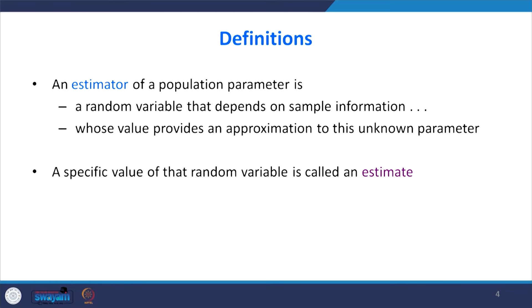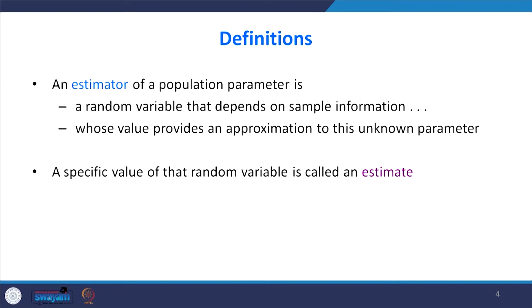Before getting into the content, let's define estimator and estimate. An estimator of a population parameter is a random variable that depends on sample information — it provides an approximation to the unknown parameter. A specific value of that random variable is called an estimate. For example, X-bar is an estimator for population mean, S-squared is an estimator for population variance, and P-hat is an estimator for population proportion. These — X-bar, S-squared, P-hat — are called estimators; their specific values are called estimates.